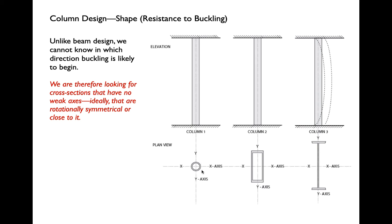As we get to more compact sections, the radius of gyration in both axes starts to come closer together. Column two still has a weak axis — weaker around Y than X — but it has some resistance in both directions and isn't as lopsided as column three. A perfectly round shape has no weak axis; it has the same radius of gyration in every axis. So no matter what direction the column begins to buckle in, that shape is equally resistant. When looking at column design, we're always looking for the worst case: the least radius of gyration, which we call the effective width.